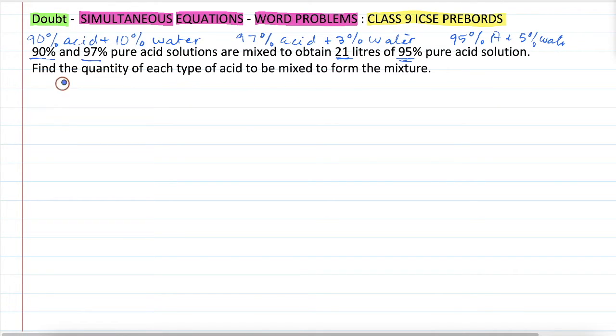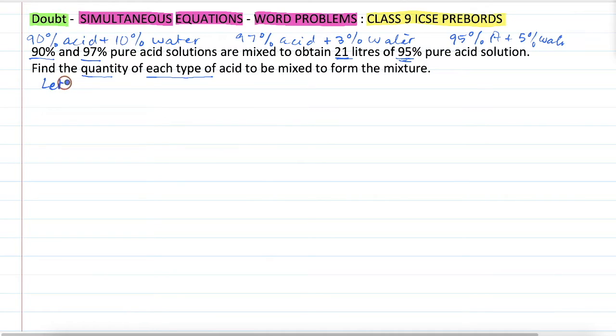Now, if we have to find the quantity of each type of acid, our assumption will be: let 90% acid be x liters and 97% acid be y liters. Now, both of these together are going to be total quantity 21 liters. So we will have x liters plus y liters equal to 21 liters, and that is our equation 1.